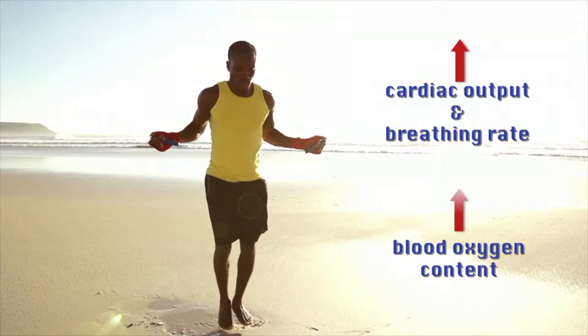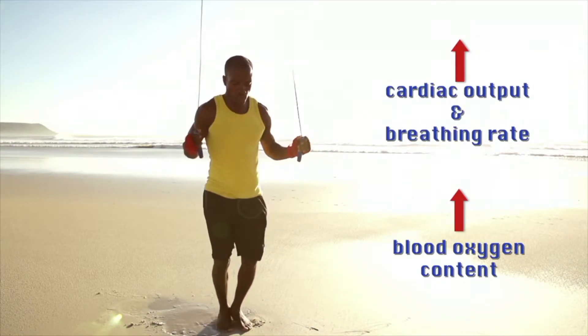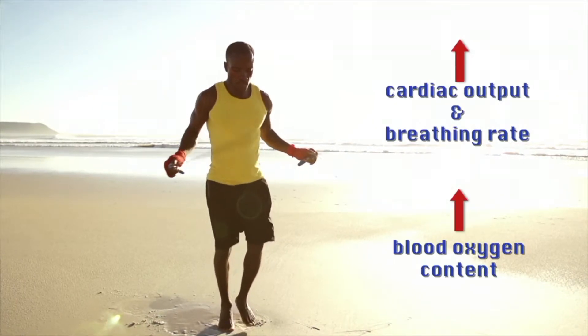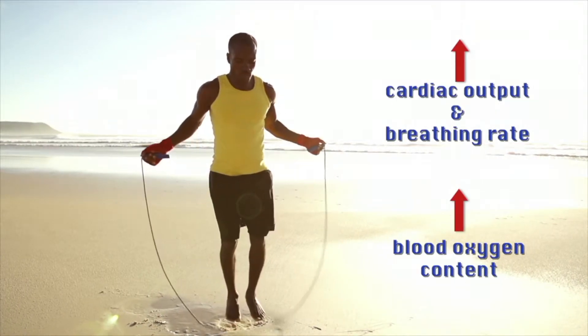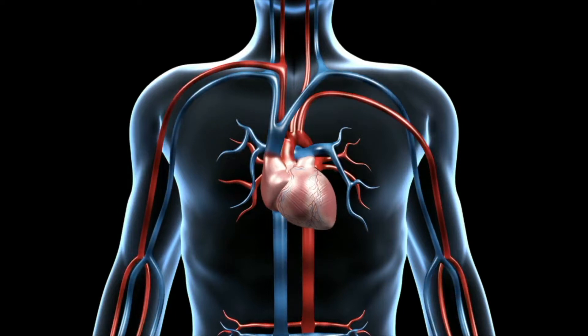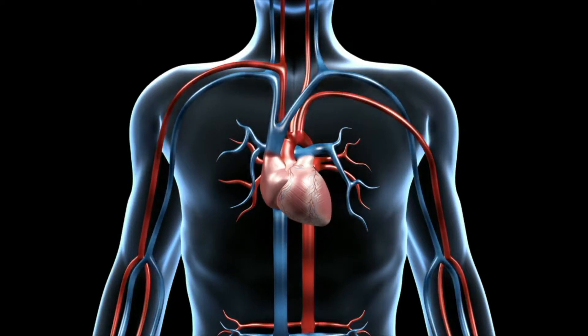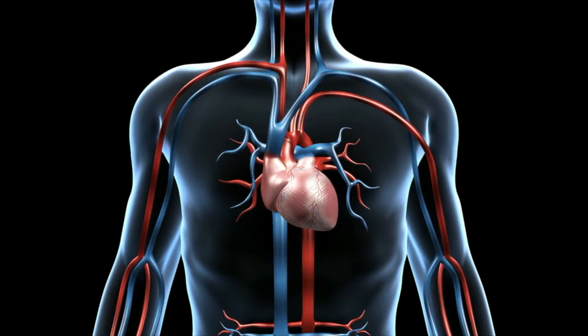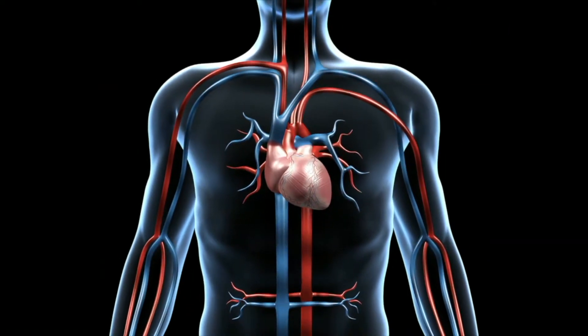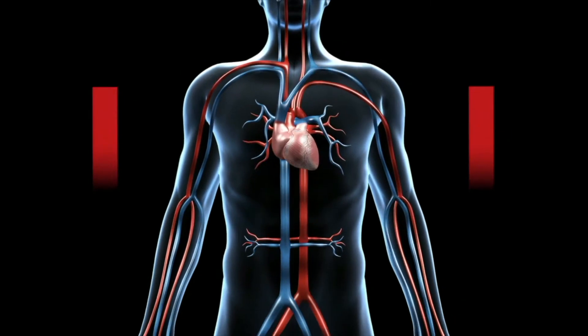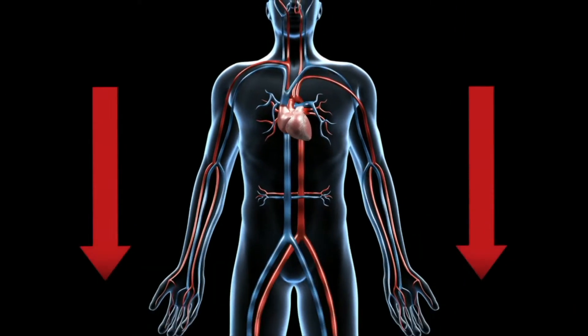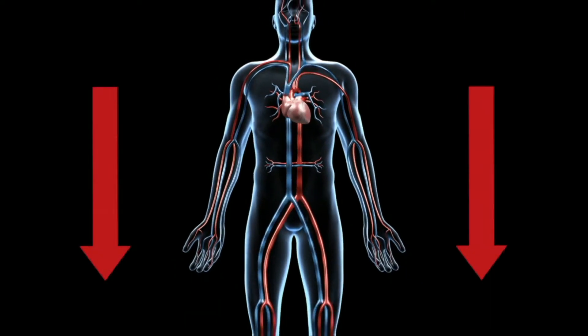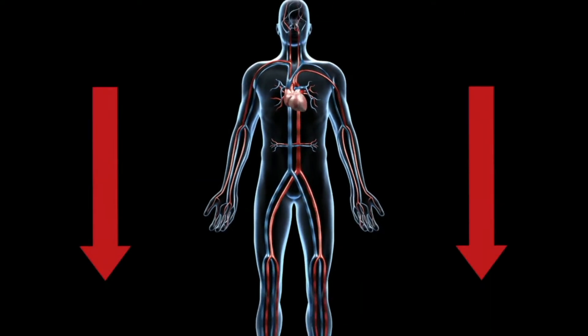His blood's oxygen content rises. At the same time, his blood is being redistributed away from the major organs to the muscles in his legs, since these tissues have the greatest immediate oxygen demand.